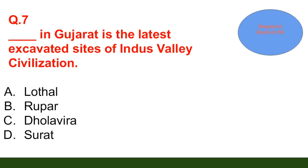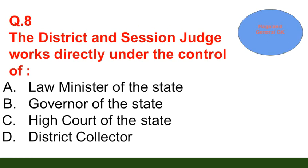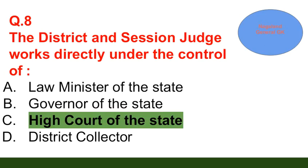Question number 8: A Session Judge works directly under the control of — option A: Law Minister of the state; option B: Governor of the state; option C: High Court of the state; option D: District Collector. The correct answer is option C — High Court of the state.